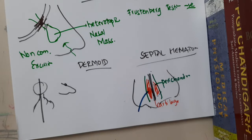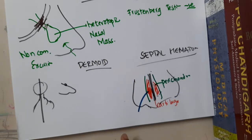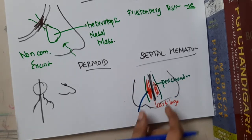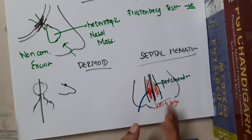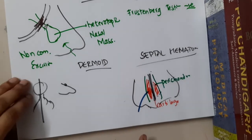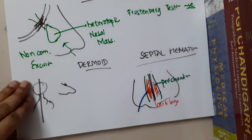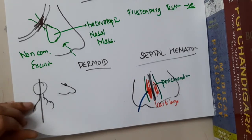The main complication is that the septal hematoma might become organized and thickened. It may also get infected, leading to abscess formation.